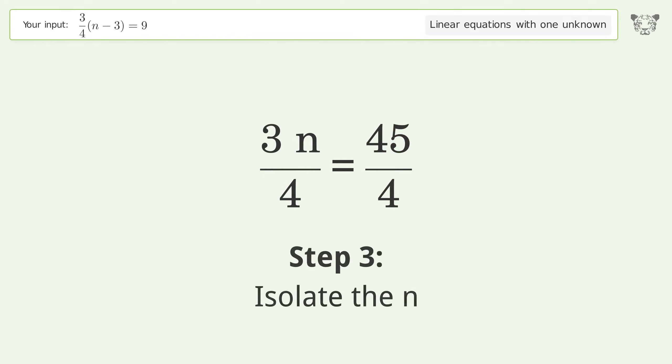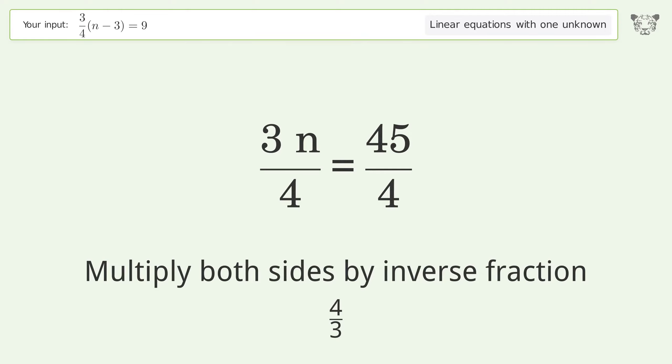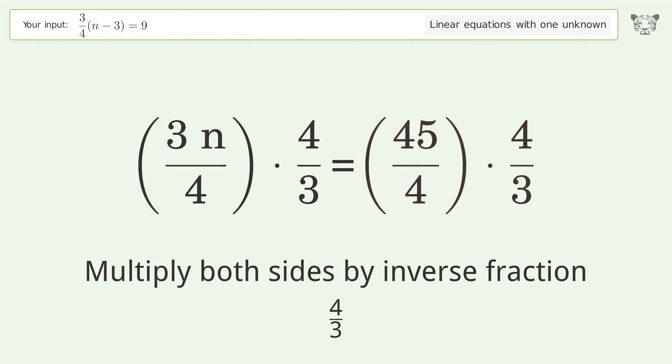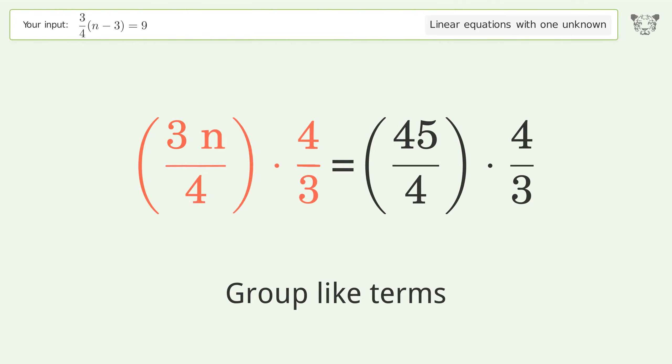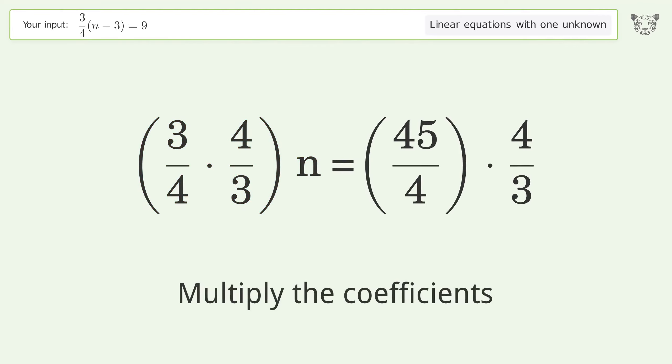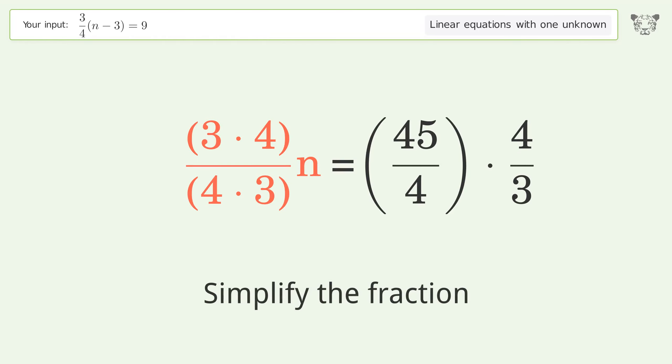Isolate the n by multiplying both sides by the inverse fraction 4 over 3. Group like terms, multiply the coefficients, and simplify the fraction.